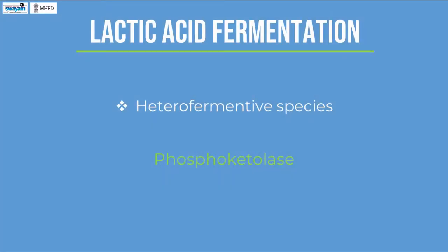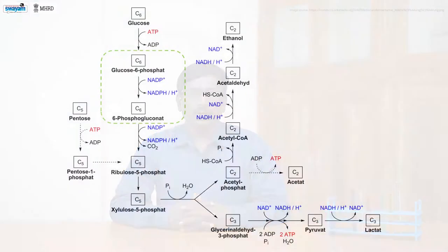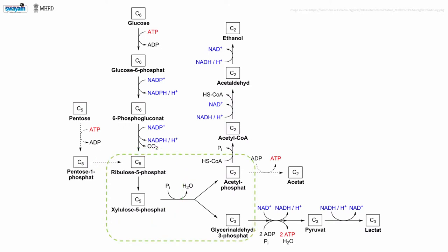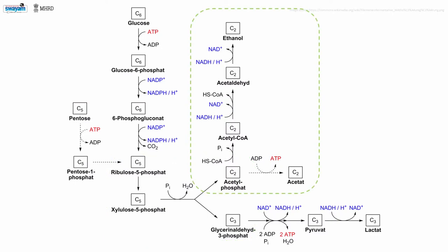In heterofermentative bacteria, the phosphoketolase pathway is used for fermentation. The bacteria are devoid of aldolase; instead, phosphoketolase is present. The conversion process involves the following steps: glucose-6-phosphate is oxidized to 6-phosphogluconate; 6-phosphogluconate is decarboxylated to ribulose-5-phosphate; ribulose-5-phosphate is epimerized to xylulose-5-phosphate; xylulose-5-phosphate is split to acetyl-phosphate and glyceraldehyde-3-phosphate using phosphoketolase.